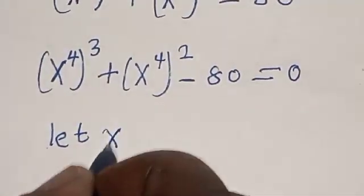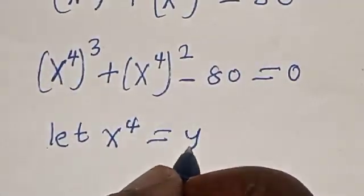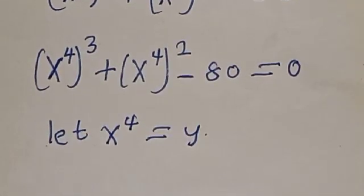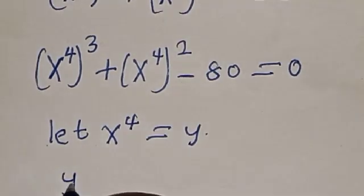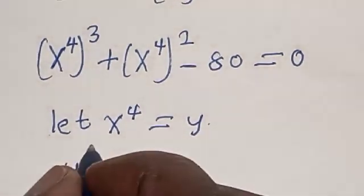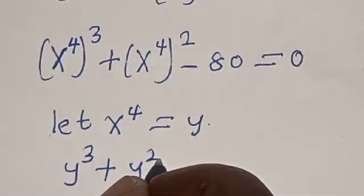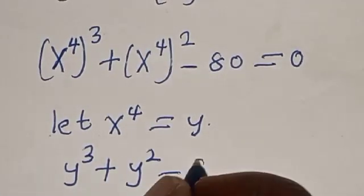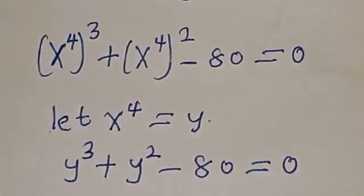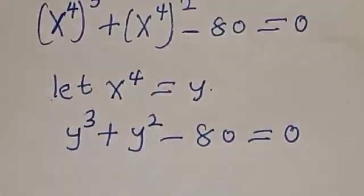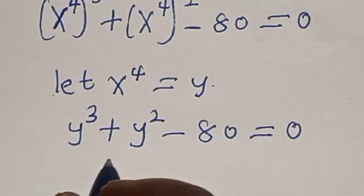Let s raised to power 4 equal y. Now we have y raised to power 3 plus y squared minus 80 is equal to zero.